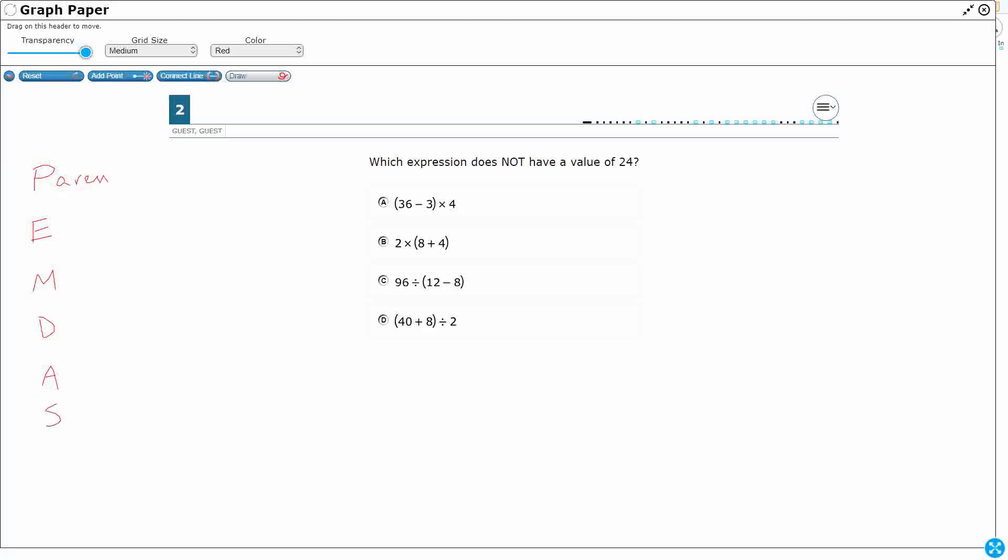So what we do first is we take care of any parentheses. I'm going to draw a line here because that's kind of our first step. And so take a look. I've got a parentheses in all four of my answer selections.